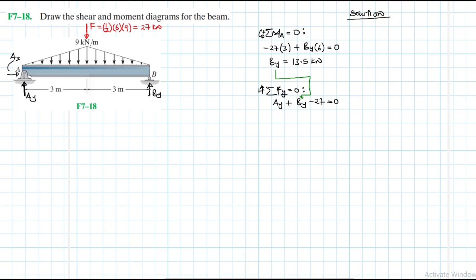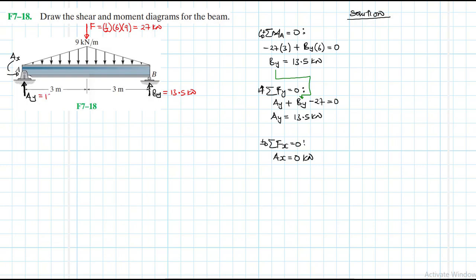A_Y is just going to be equal to 27 minus 13.5, which gives us 13.5 kilonewtons. Then we have summation of forces in the X direction equal to zero, going to the right being positive, therefore A_X equals zero kilonewtons. So our B_Y is equal to 13.5 kilonewtons, A_Y is equal to 13.5 kilonewtons, and A_X is equal to zero kilonewtons.